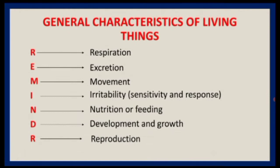We can use the acronym REMIND-R to differentiate between living and nonliving things. Living organisms such as plants and animals can be distinguished from nonliving things such as stones, tables, books, pens, and remotes by the seven life processes. REMIND-R stands for: R — Respiration, E — Excretion, M — Movement, I — Irritability, N — Nutrition, D — Development, and R — Reproduction.